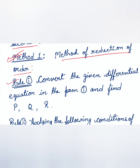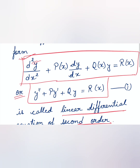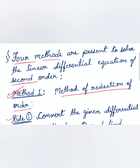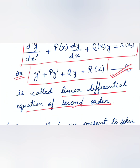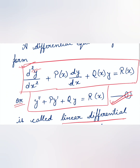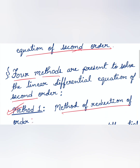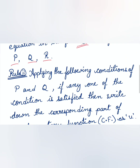Rule 1: First, we convert the given differential equation to the form of equation 1 — that is y'' + Py' + Qy = R(x) — and then find the values of p, q, and r, then proceed to rule 2.